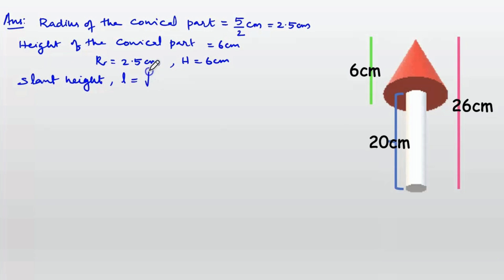Slant height of the cone equals root of r² plus h². This equals root of 2.5² plus 6² equals root of 6.25 plus 36 equals root of 42.25 equals 6.5 cm.